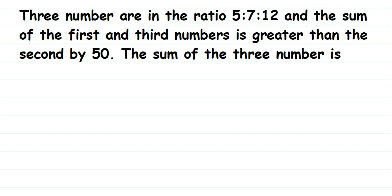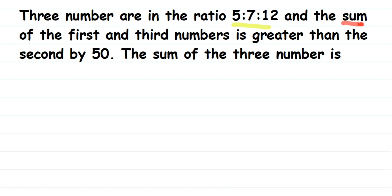Here is a question on ratios. Three numbers are in the ratio 5:7:12, and the sum of the first and the third number is greater than the second by 50. So what is given here: they have given the ratio of three numbers which is 5:7:12, and a relationship between the numbers — the sum of the first and the third number is greater than the second by 50.